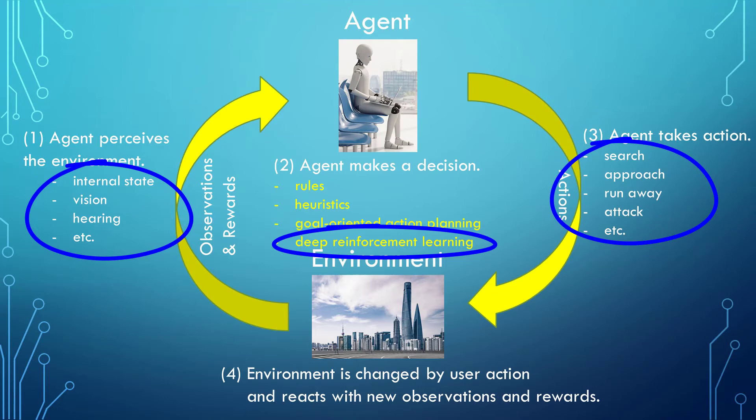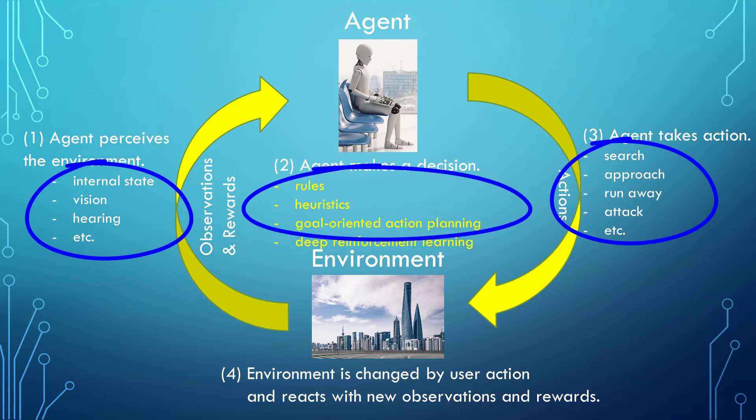Let's also keep in mind that deep reinforcement learning is not the only way to make the decision. We can also try something simpler, like having a set of heuristic rules, or look at goal-oriented action planning, or GOAP, which chains rules together. So there are a lot of things to try. For the time being, let's focus on deep reinforcement learning and Unity ML Agents.